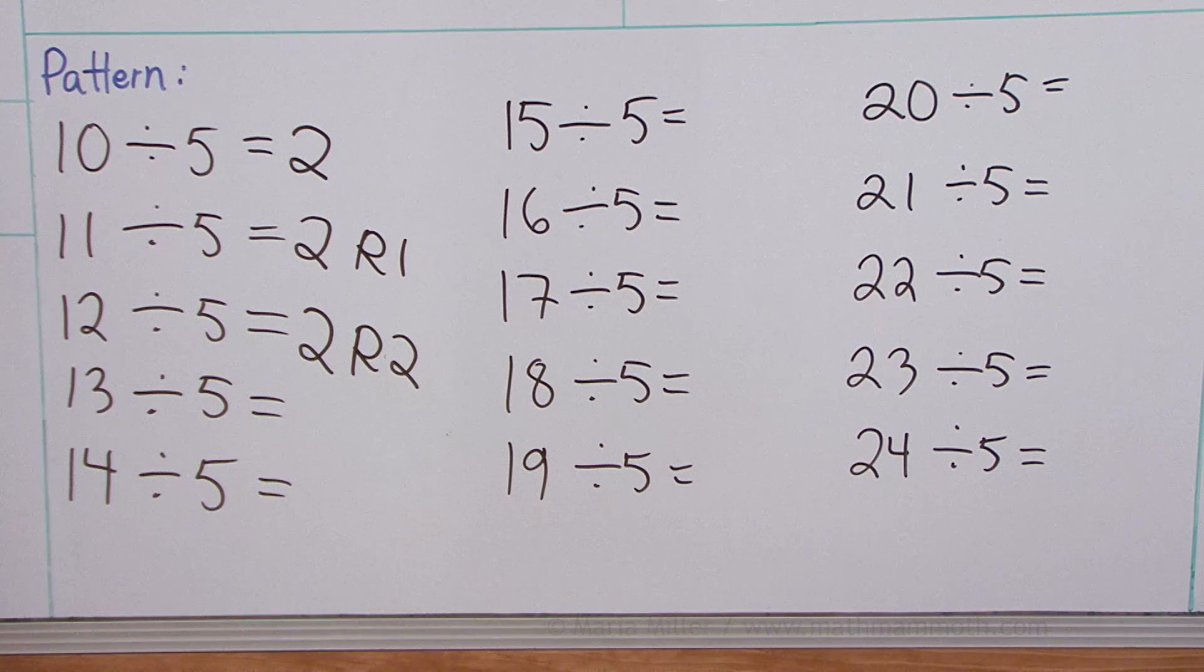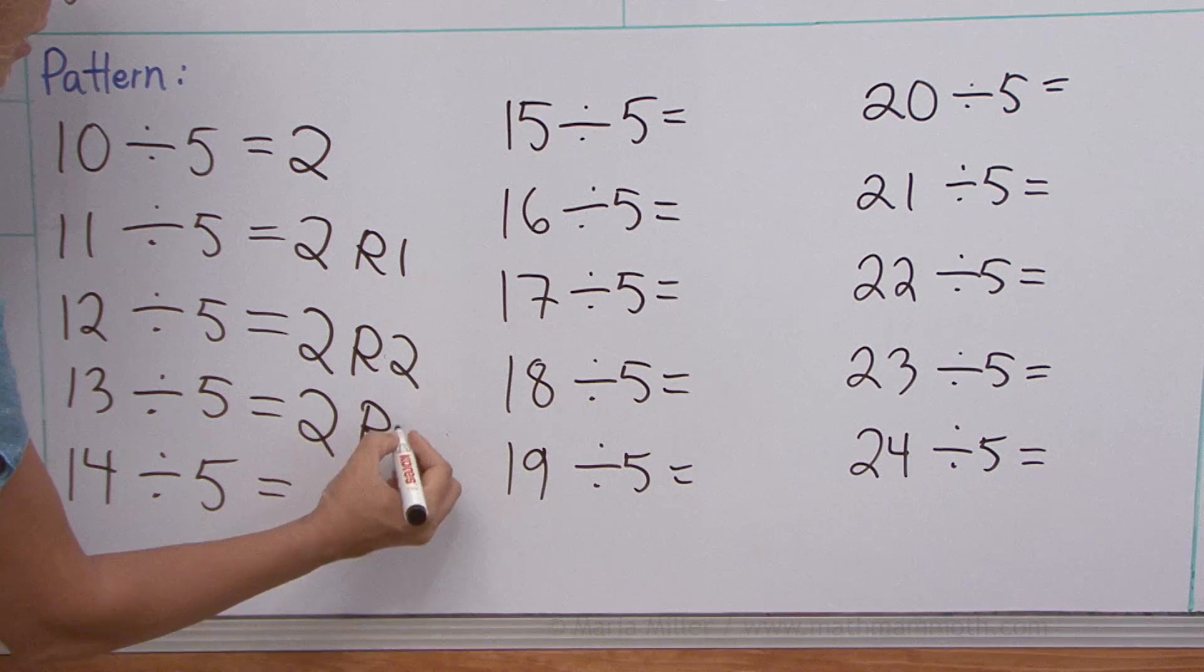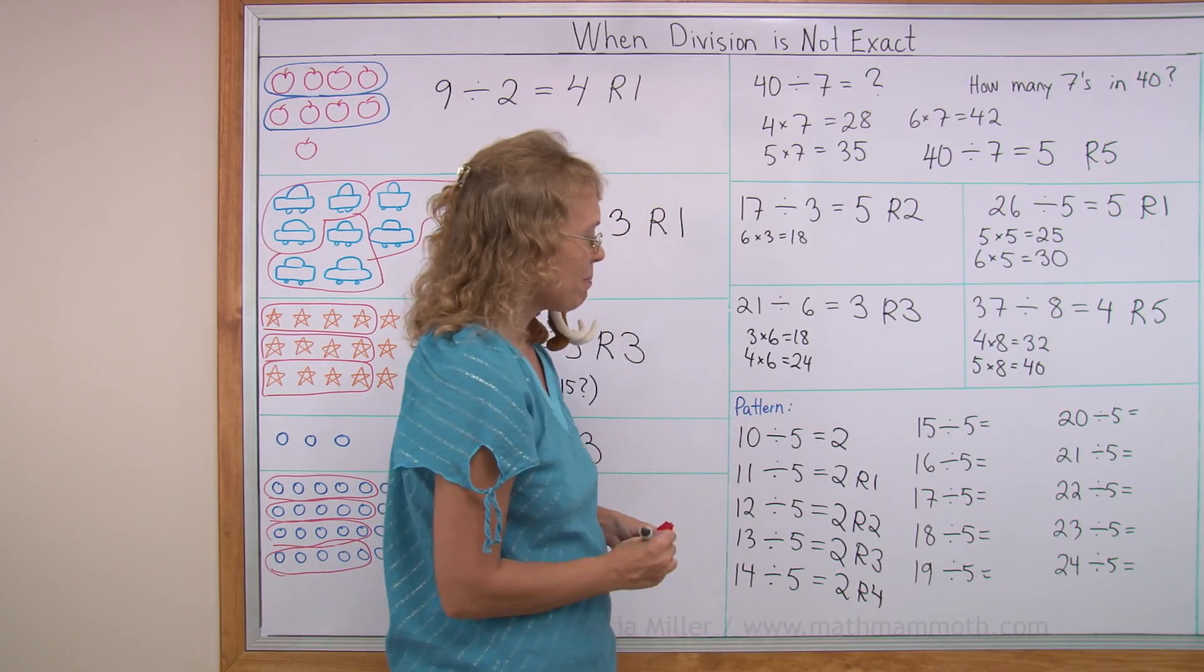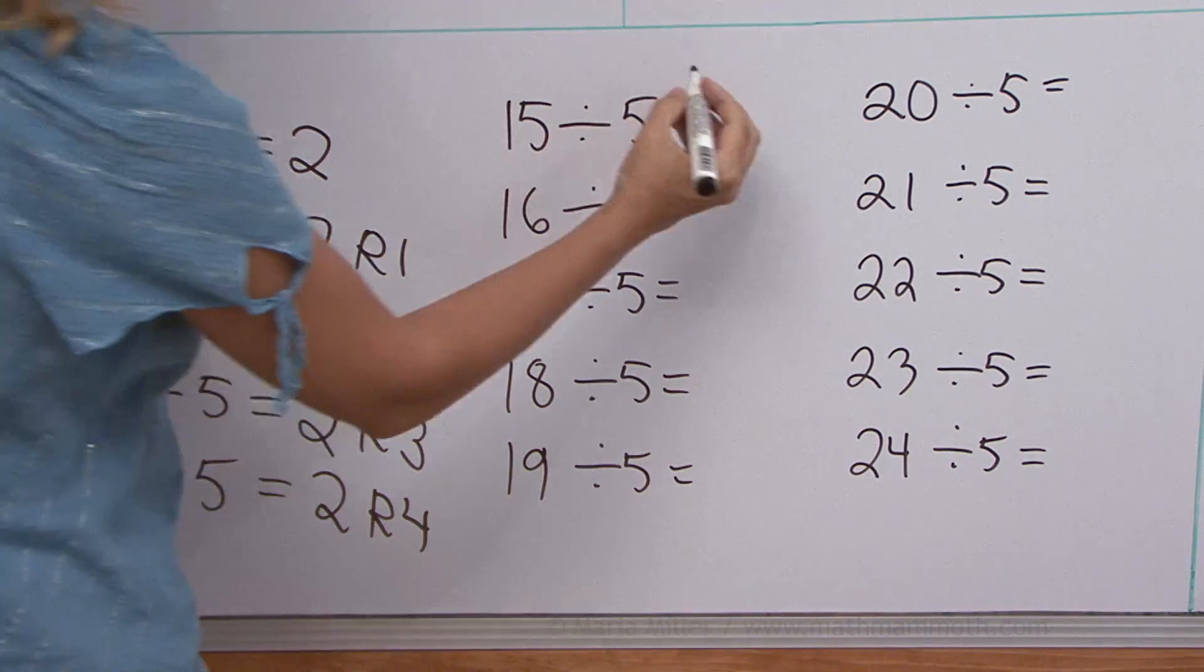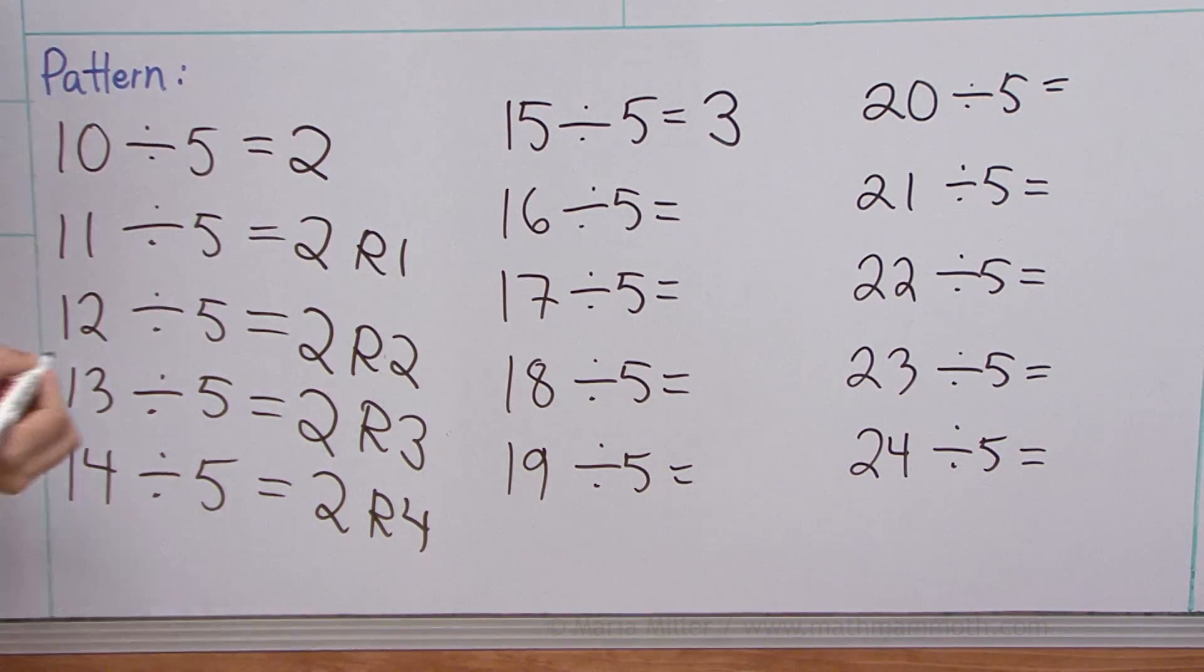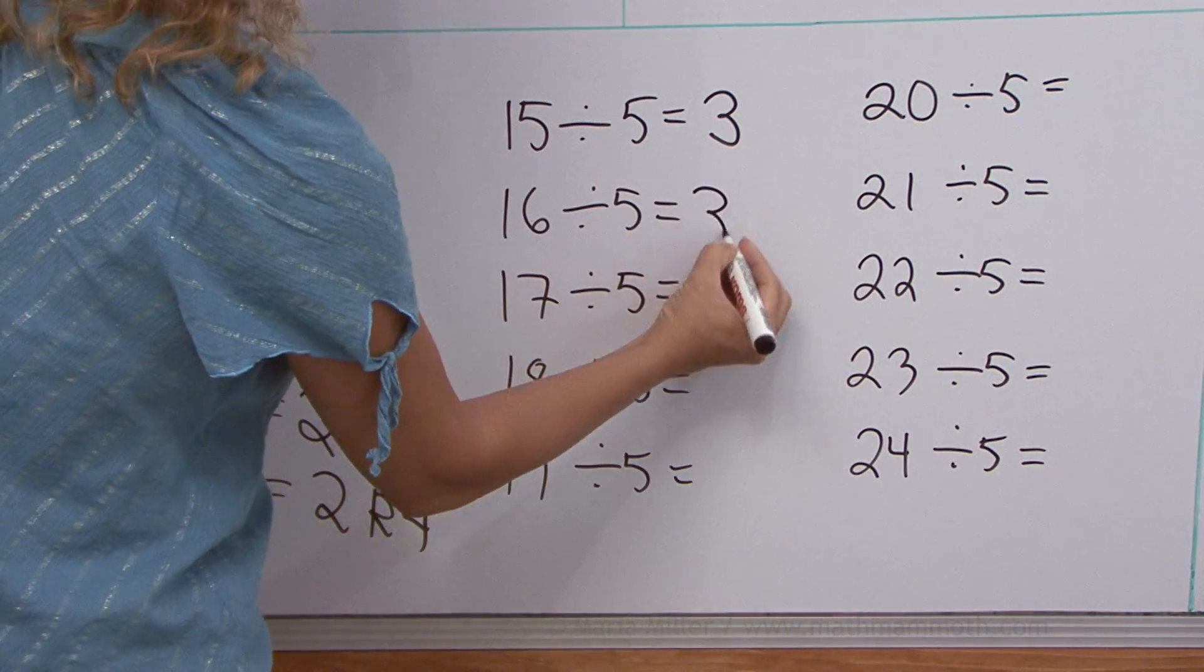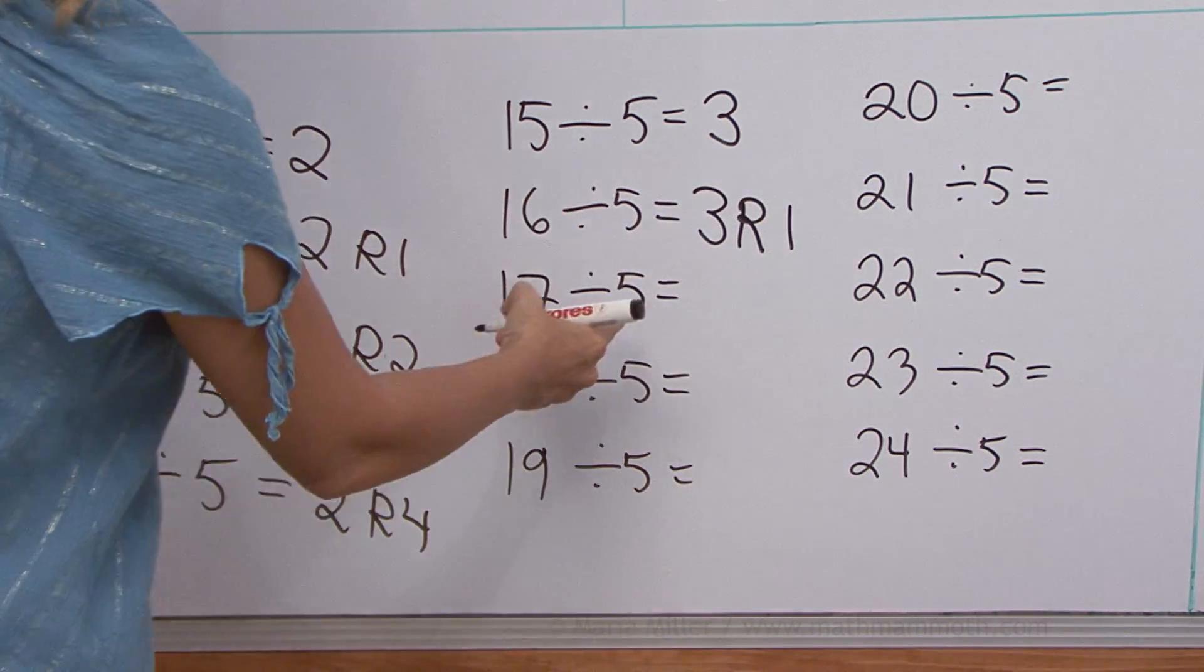And thirteen divided by five. How many fives are in thirteen? Still two fives, two times five is ten. And now we have three left over. And then fourteen divided by five is two, remainder four. Can you continue the pattern? Fifteen divided by five is three, and there is no remainder. The division here is even. Sixteen divided by five. How many fives are in sixteen? Three fives in sixteen. And now we have a remainder of one.